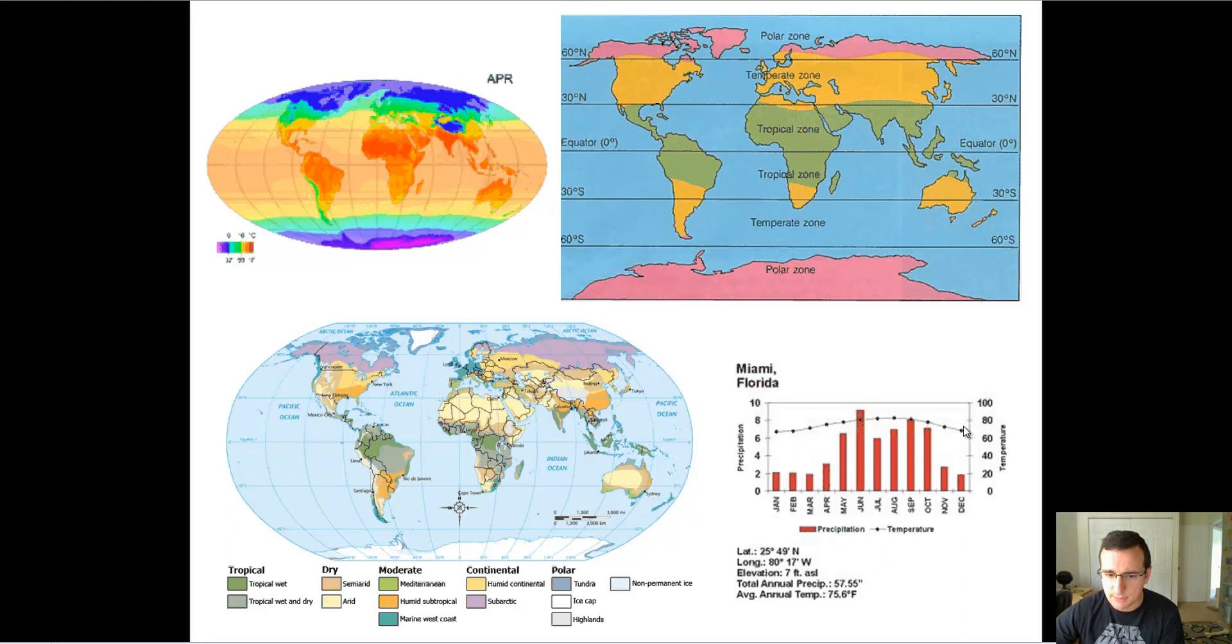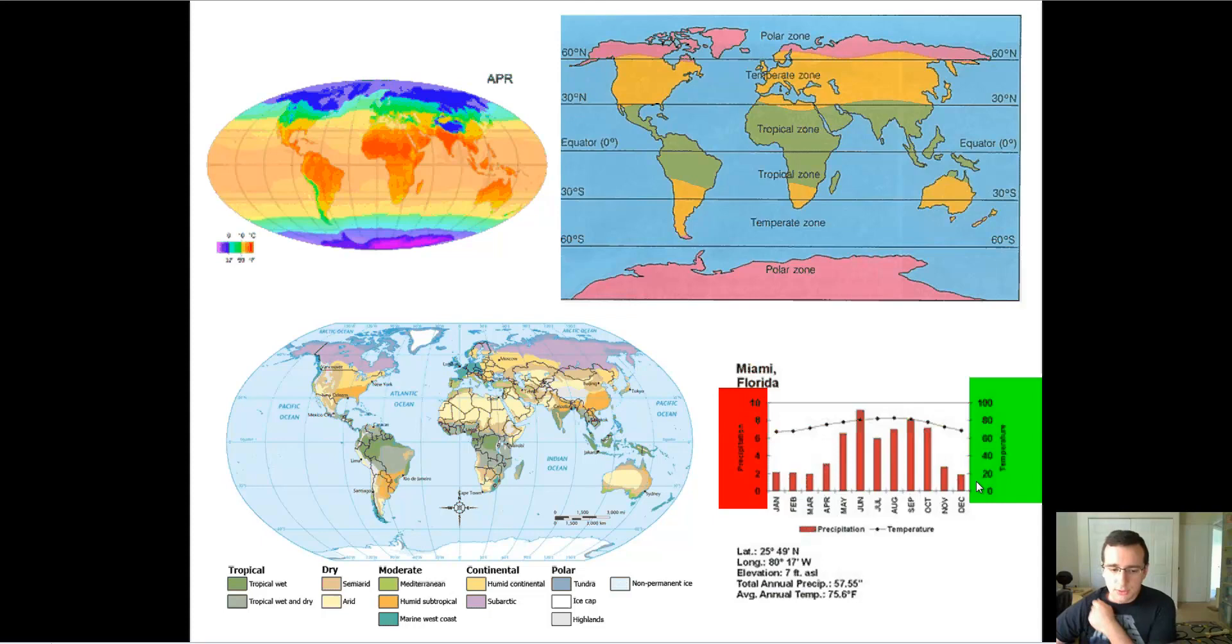On the right side, you have the indication for the temperature. On the left side, you have the indication for the precipitation. Notice how in Florida, it's hot throughout the year and it barely changes. It's a little more hot during the summer months, but the precipitation changes a lot more during the summer months than toward the winter months of the year. It's a good example of a climatograph.